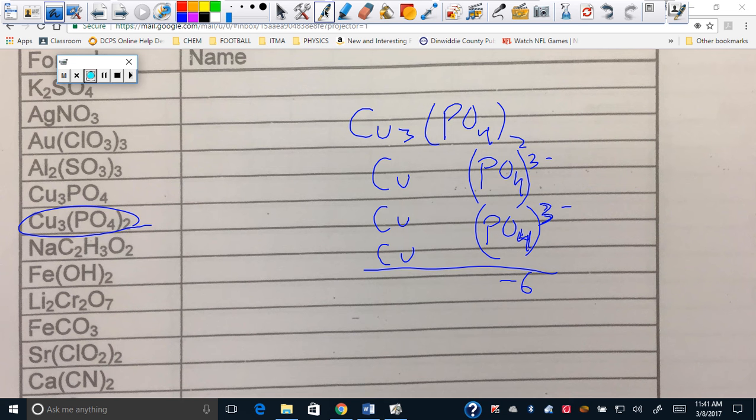Okay, Kiara, I have copper, copper, and copper. All those have to equal how many? Positive six. So what is positive six divided by three coppers? Two. Each one of these is positive two.